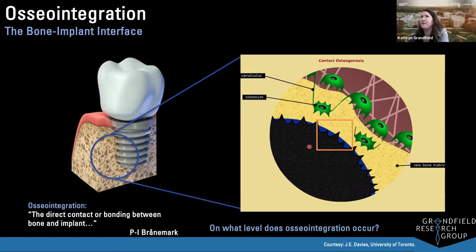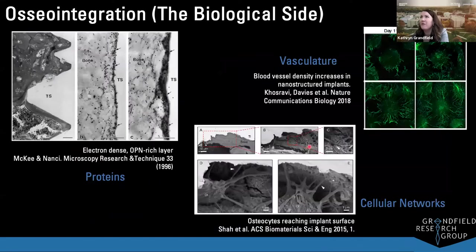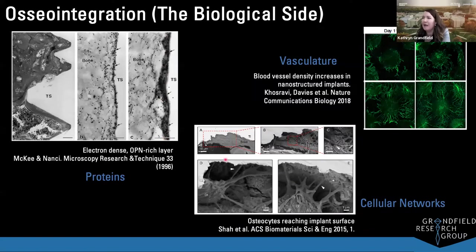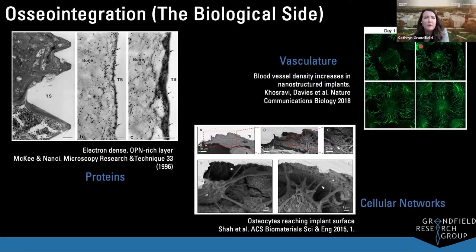Many biological factors are important for osseointegration — proteins like osteopontin deposit at the implant surface, cells play a major role in bone formation near the interface, and vasculature provides blood supply and nutrients. Rather than dwelling on those biological factors, I want to show you the structure of bone as a material at the interface and what we've learned about that.